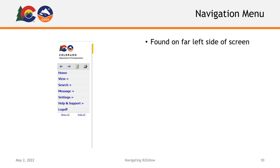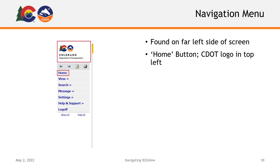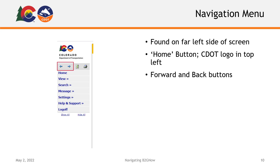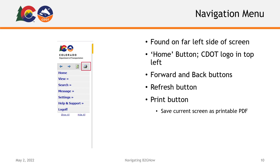Next, we will review the navigation menu on the left-hand side of your screen. At the top, you will find the Home button, represented by the CDOT logo. Clicking this will automatically take you back to your homepage to view your dashboard. Below the Home button are forward and back arrows, a refresh button, and a printer icon, which will save your current screen as a printable PDF. In this menu bar, any selection with a double arrow beside it indicates an expanding menu with more navigation options.